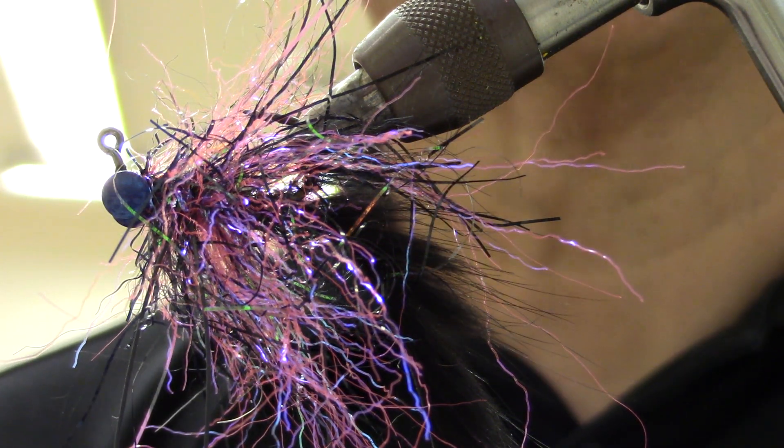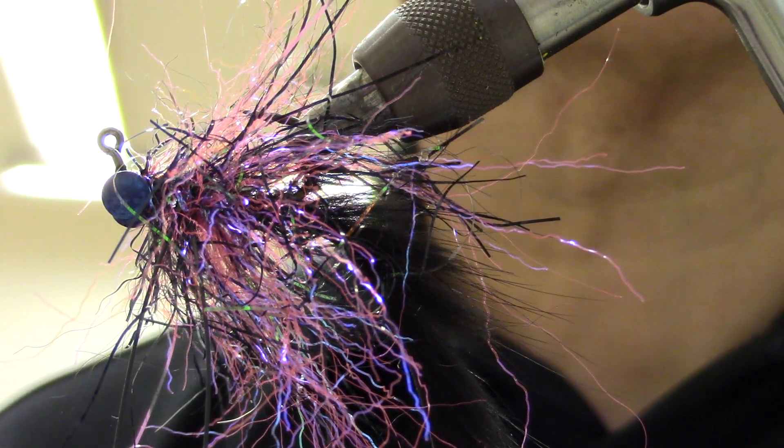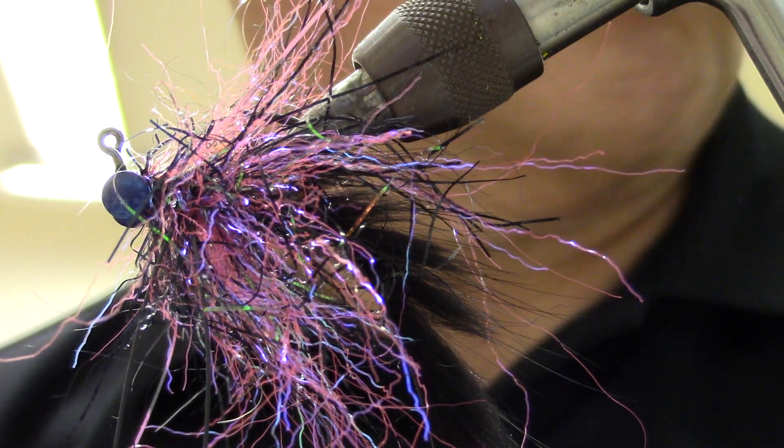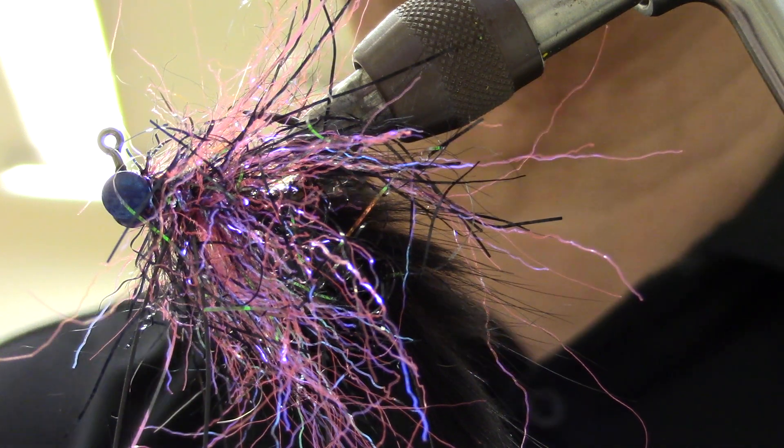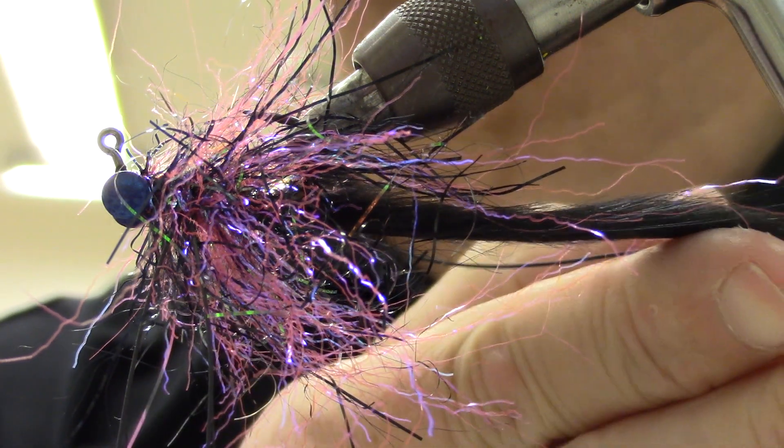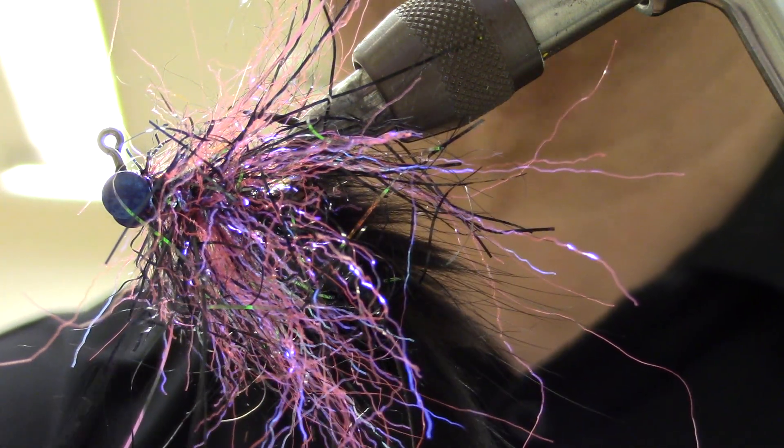Hi everybody, this is Sean. I'm over at my friend's house, Mike, and we are playing around on a vise. So I put together this little bottom bouncer jig, so I thought I'd show you how to do it.